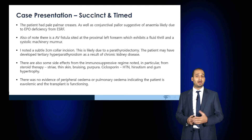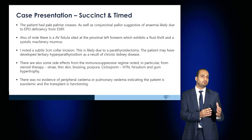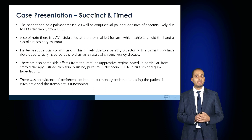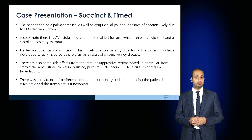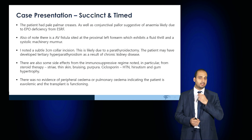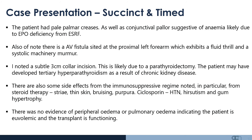The patient had pale palmar creases as well as conjunctival pallor, suggestive of anemia due to reduced EPO. Also of note, there was an AV fistula at the proximal left forearm exhibiting a fluid thrill and a systolic machinery murmur. I noted a subtle 3 cm collar incision, likely from a parathyroidectomy, and the patient may have developed tertiary hyperparathyroidism as a result of previous chronic kidney disease. I also noted side effects from immunosuppression including steroid therapy — striae, thin skin, bruising, purpura — and effects from cyclosporine: the patient was deemed to be hypertensive, hirsute, with some evidence of gum hypertrophy. I noted that there was no evidence of peripheral or pulmonary edema, indicating that the patient is euvolemic and the transplant is functioning.